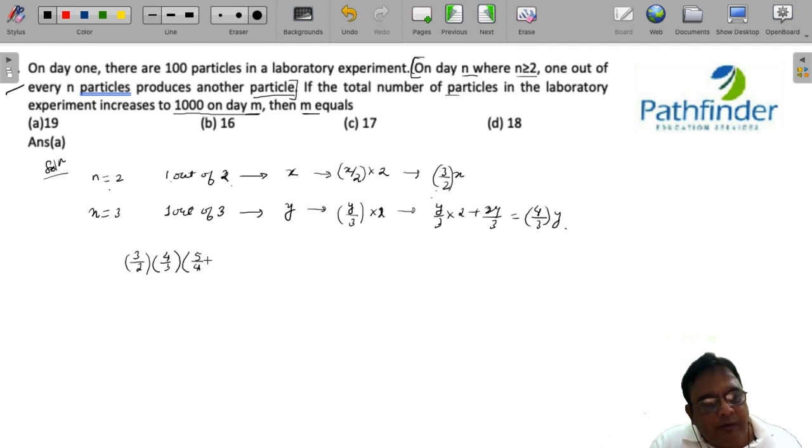Similarly, when n is equal to 4, the number of particles should be 5 by 4 of the previous day, and so on. On the nth day, the number of particles will be n upon n minus 1. In fact, on n plus 1th day, the number of particles will be n plus 1 upon n.